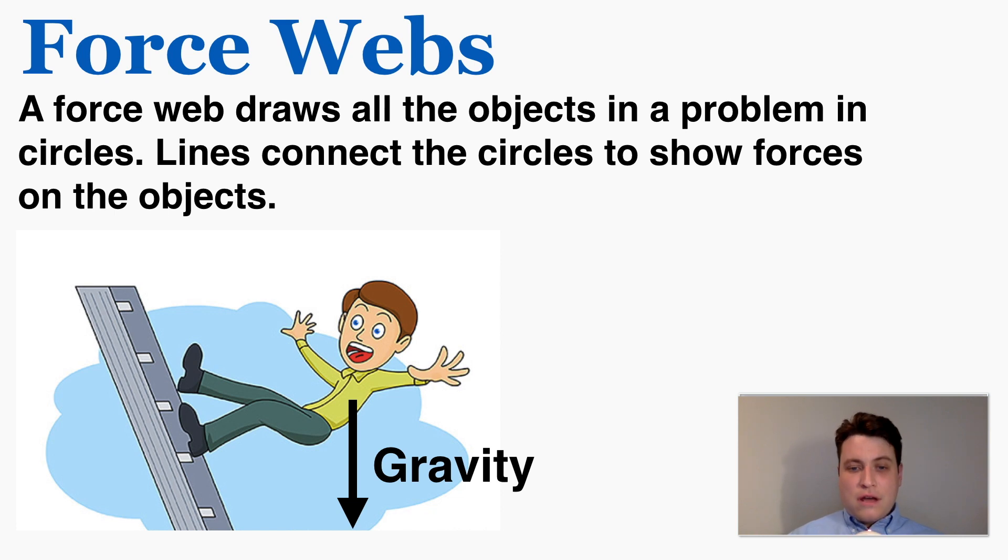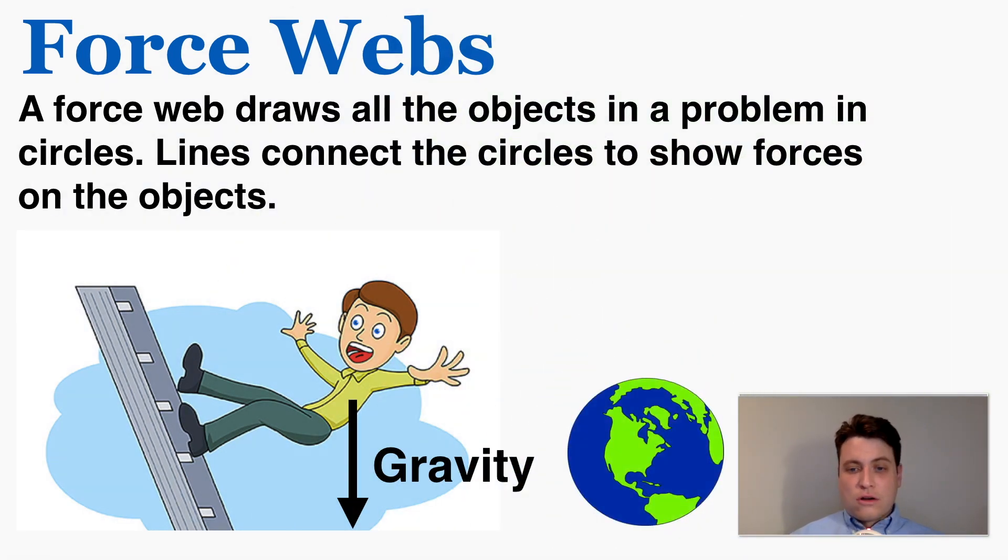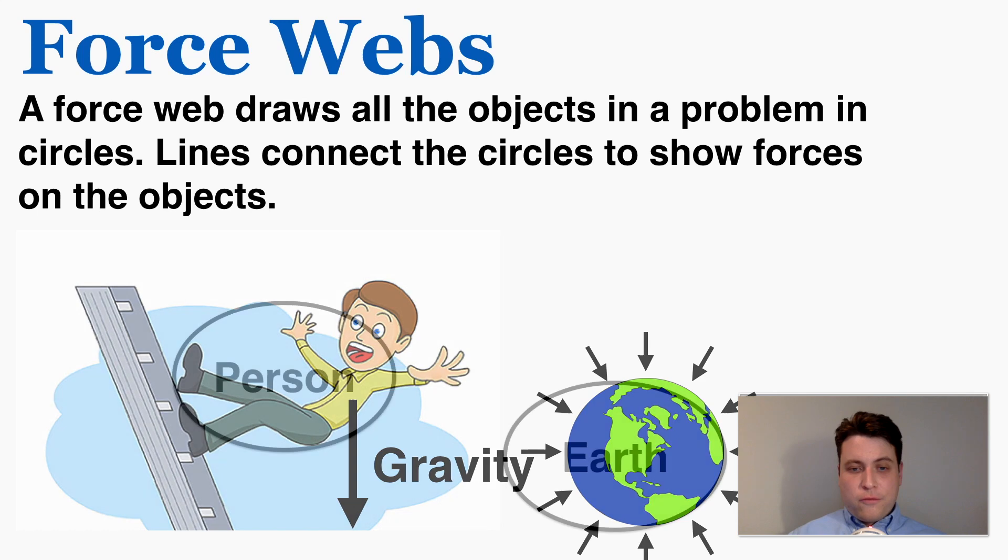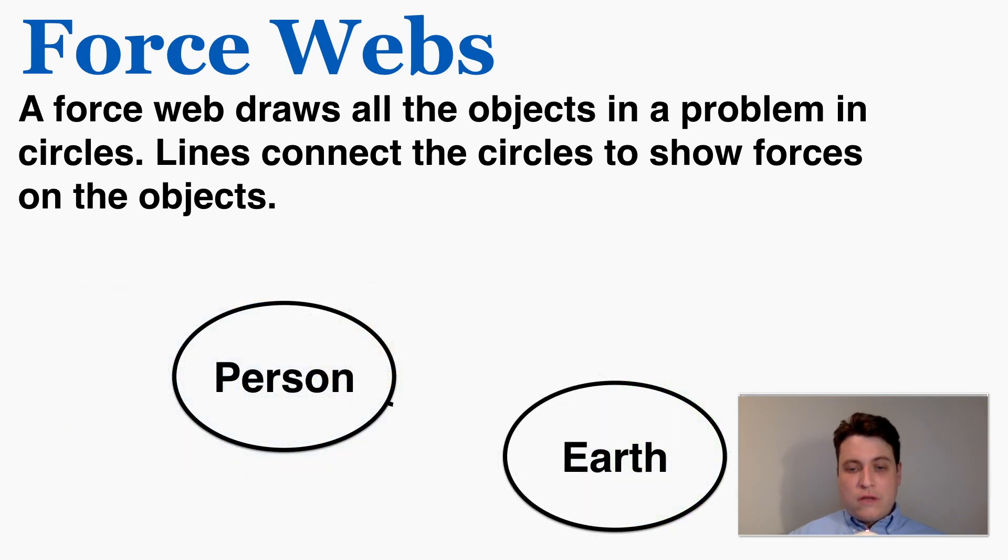And I know that the force of gravity comes from the earth, like the entire earth pulling down on you like this. And so these would be the two objects in my first problem, the person and the earth. Those are the only two objects that are putting a force on each other. So between them is the force of gravity.